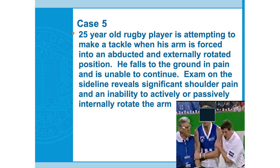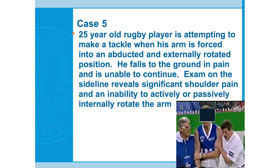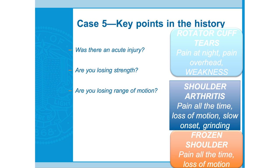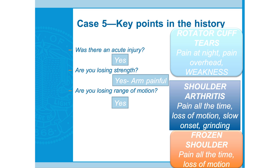Case six: 25-year-old rugby player attempting a tackle has his arm forced into an abducted, externally rotated position. He falls to the ground in pain and is unable to continue. On the sidelines: significant shoulder pain and inability to actively or passively internally rotate the arm — he's locked in one position. Running the algorithm: acute injury — yes. Losing strength — yes, he won't move it. Losing range of motion — yes, his shoulder is stuck. This is a shoulder dislocation.